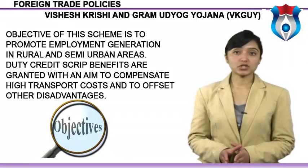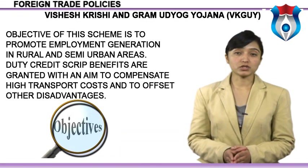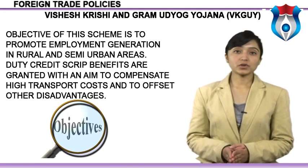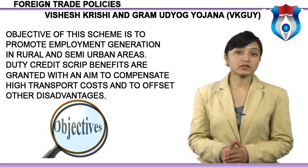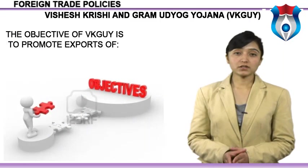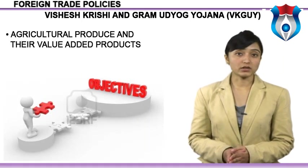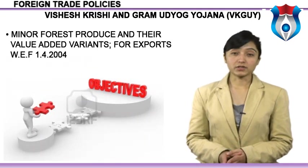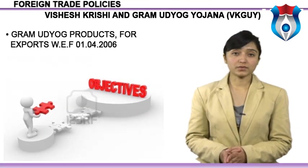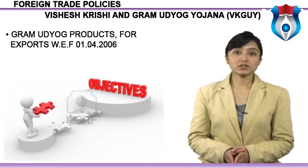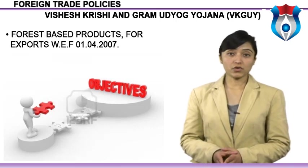Vishesh Krishi and Gram Udyog Yojna (VKGUY): the objective of this scheme is to promote employment generation in rural and semi-urban areas. Duty credit scrip benefits are granted with an aim to compensate high transport costs and to offset other disadvantages. The objective of VKGUY is to promote exports of agricultural produce and their value-added products, minor forest produce and their value-added variants for exports with effect from 1st April 2004; Gram Udyog products for exports with effect from 1st April 2006; and forest-based products for exports with effect from 1st April 2006.